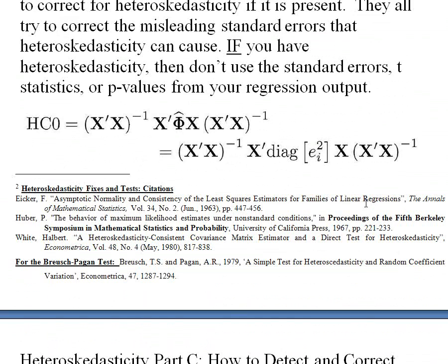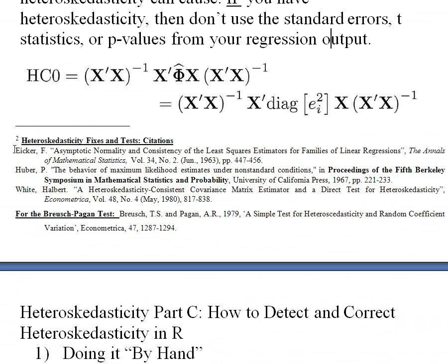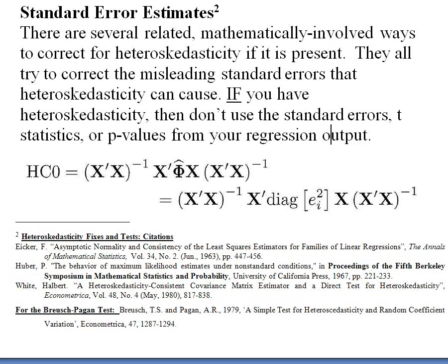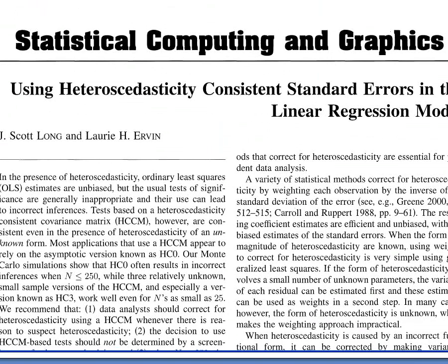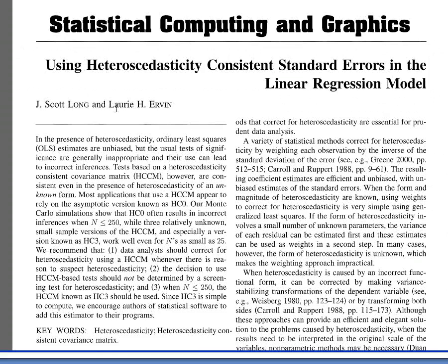Let me show you some references. Eicker's paper is from 1963, Huber's paper is from 1967 — which came before White's paper, the economist, from 1980. These three people more or less independently came up with basically the same result — a way to fix heteroscedasticity — so you should give credit to all three. There's also a reference for the Breusch-Pagan test from 1979. One last paper that gives a good overview of the mathematics and history of this heteroscedasticity correction is by Scott Long and Laurie Irvin.